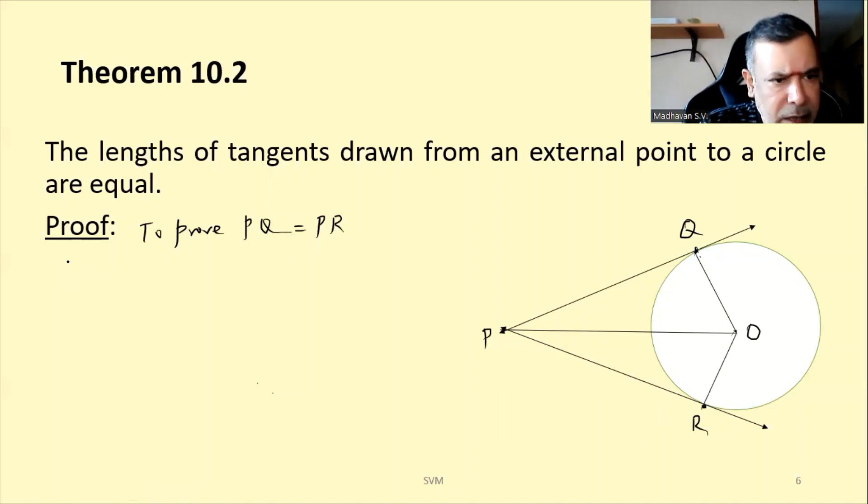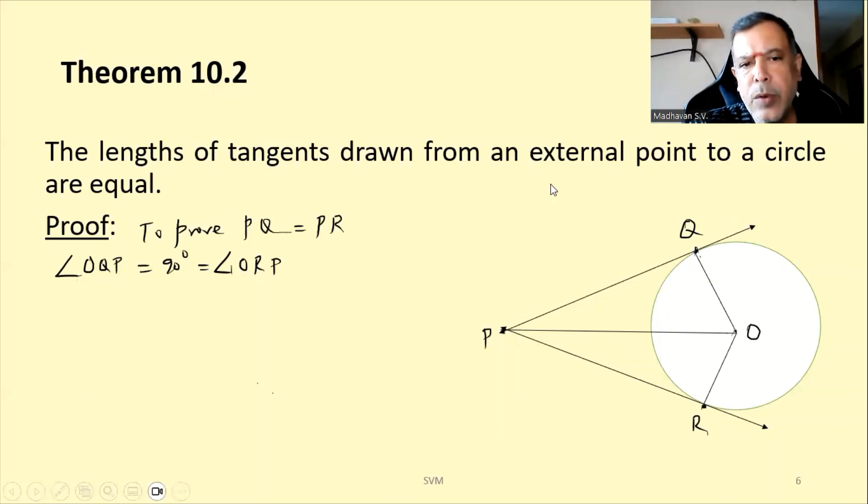So now we may notice angles OQP is 90 degrees and even angle ORP is also 90 degrees because we know, we already saw in the theorem that this is perpendicular, means OQ is perpendicular to this tangent and OR is perpendicular to this tangential line. So, on that basis, I can say